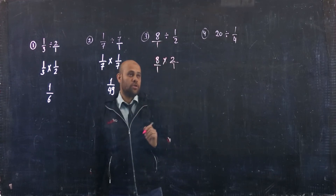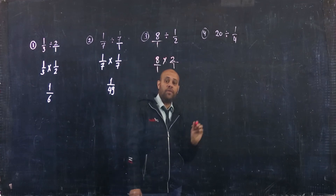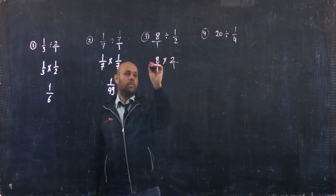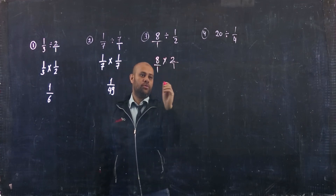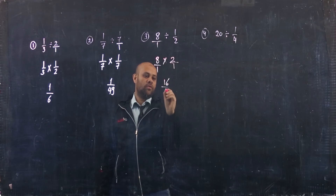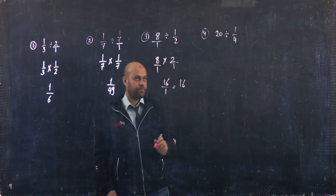So you have 8 by 2 over 1. 8 multiplied by 2 equals 16, so the result is 16/1, which equals 16.